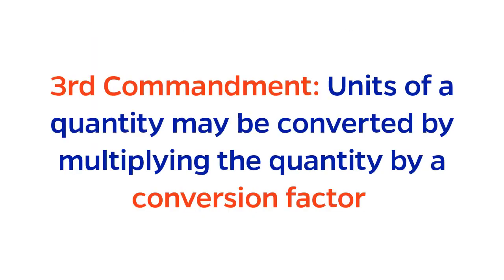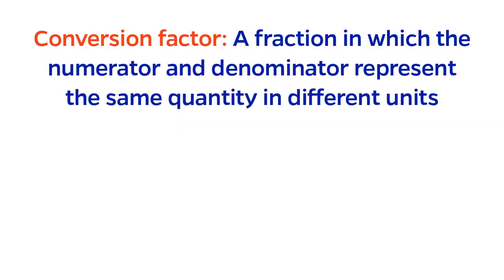The third commandment: Units of a quantity may be converted by multiplying it by a conversion factor. A conversion factor is, essentially, a fraction in which the numerator and the denominator represent the same quantity but in different units. Technically, this is the same as multiplying by 1, which is always mathematically permissible.